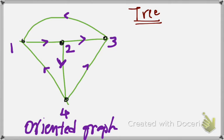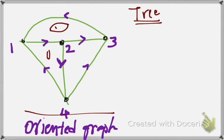The only difference is you don't have closed paths in a tree. For example, I have this oriented graph here, which has several closed paths. This is a closed path, this is closed, this is closed, and this is closed. And when I'm drawing a tree from an oriented graph, I need to avoid the closed paths.